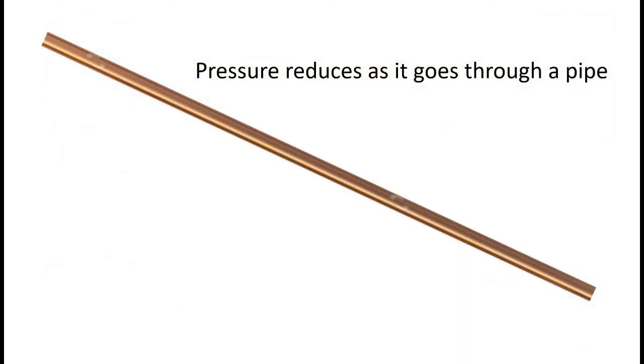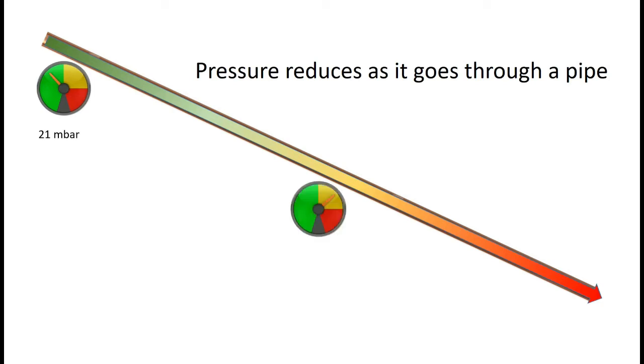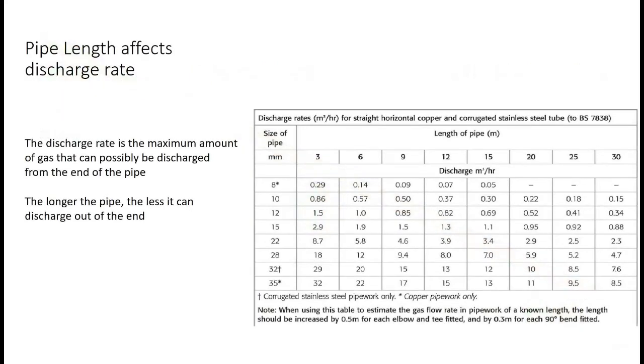Now pressure reduces as it goes through a pipe. It might start at the beginning of a pipe at 21 millibar. As it travels through it loses pressure, perhaps down to 20, and then by the time it comes out the end of the pipe it might only be 19 millibar. This pressure loss is what we are having to take account of when we do our pipe sizing. This has already been worked out in the discharge tables.